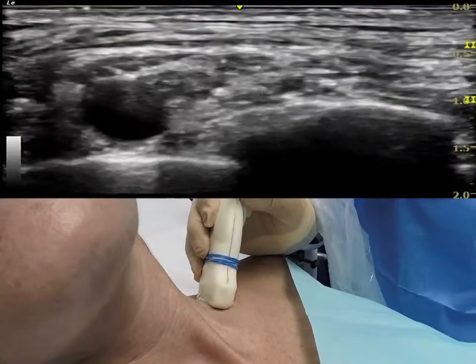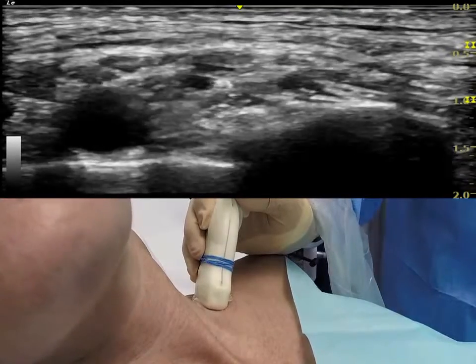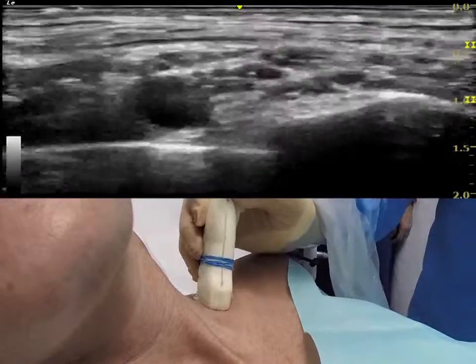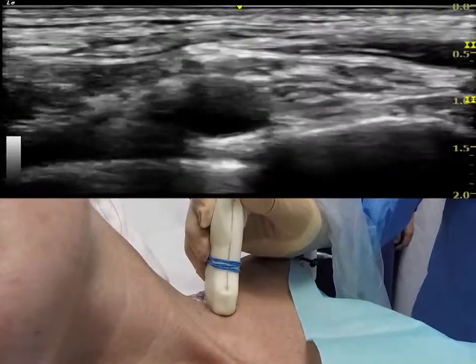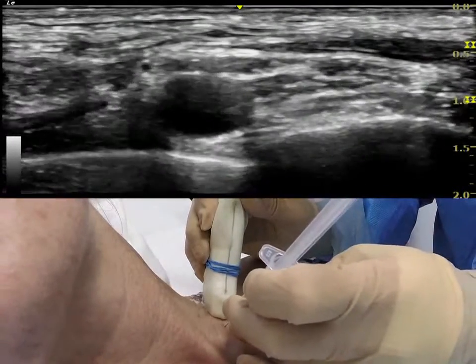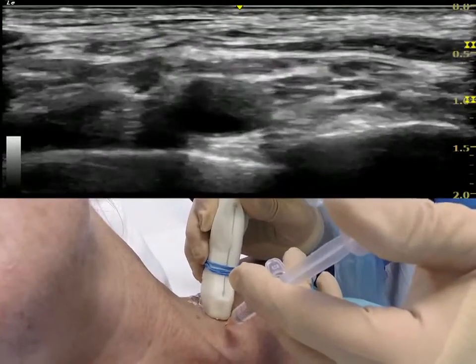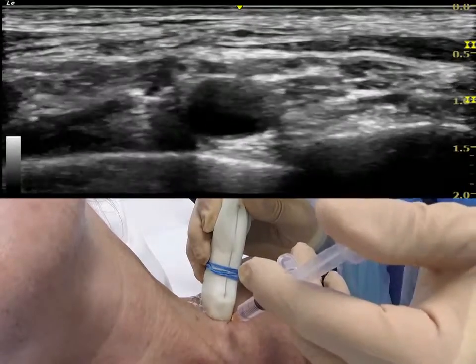This video shows the insertion of a supraclavicular brachial plexus catheter using the Pajunk e-cath system. For a single shot nerve block, we use the lateral to medial approach that you're probably familiar with, but for a catheter we use a medial to lateral insertion as demonstrated here.